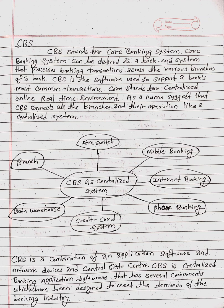CBS performs some operations as centralized systems, which are: ATM switch, mobile banking, internet banking, phone banking, credit card system, data warehouse, and branch. CBS is a combination of an application software, network devices, and a central data center.